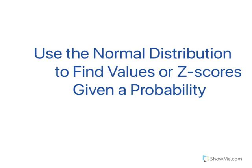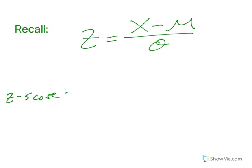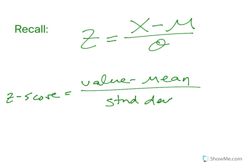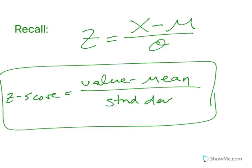Use the normal distribution to find values or z-scores given a probability. Recall that a z-score is found by taking the value minus the mean over the standard deviation. Sometimes it's helpful to write it out: value minus the mean over the standard deviation. If you understand the symbols, x minus mu over sigma, that's great. Use the symbols. But if you struggle with that, then use the words. It means the same thing.